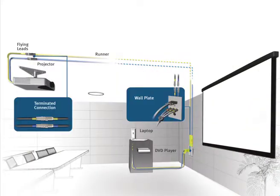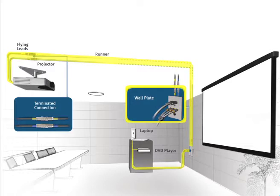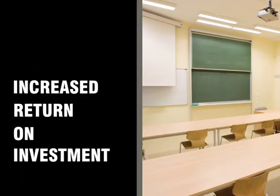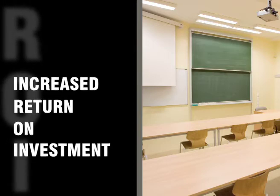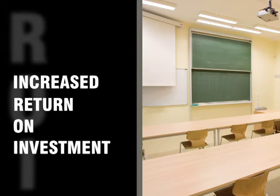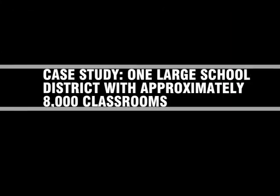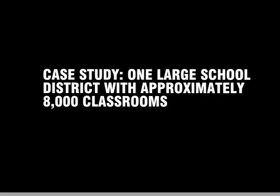Simply select the appropriate runner, wall plate, or flying lead, and with a twist and a turn, the termination is complete. It's just that easy. No more field termination. Rapid Run increases your return on investment because saving time translates to saving money.